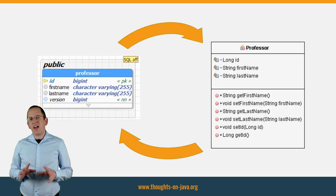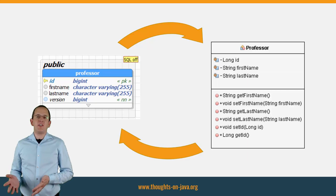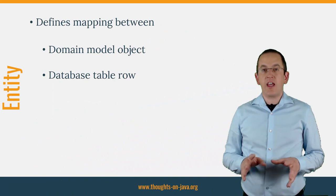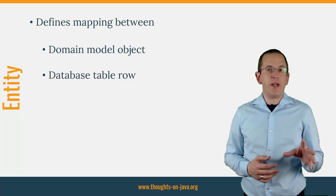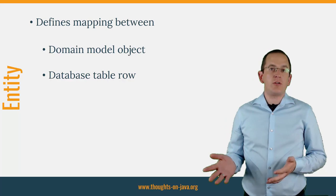Sounds easy, right? To be honest, there are a few more things required by the JPA specification. But they are so basic and easy to follow that you will automatically fulfill them when you model your entities. The annotations shown in this and the following lectures tell your JPA implementation how it shall map an object of your domain model to the corresponding row in a database table.